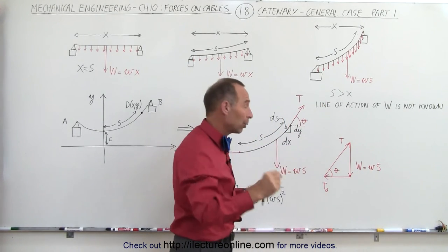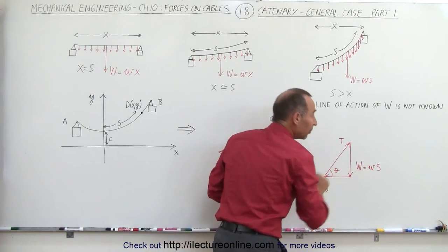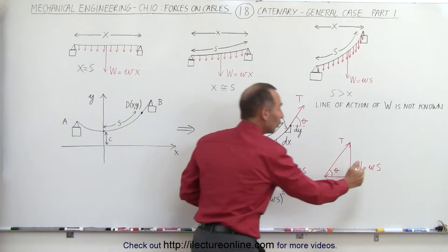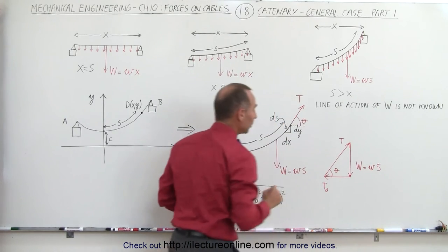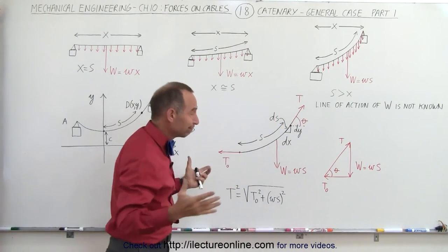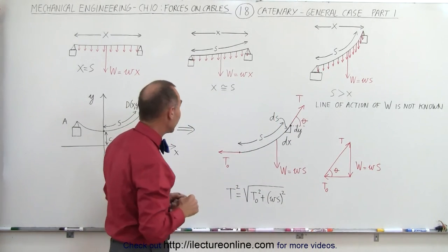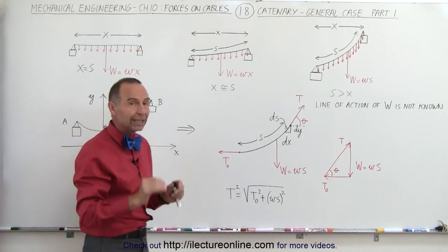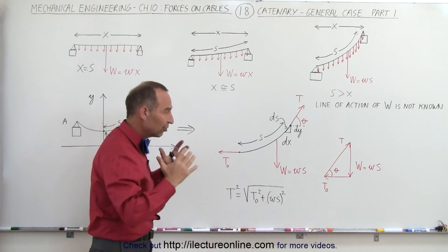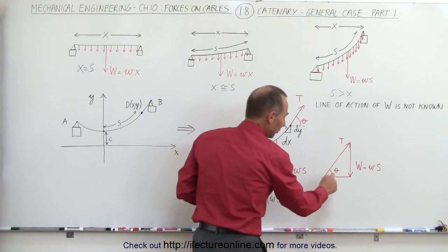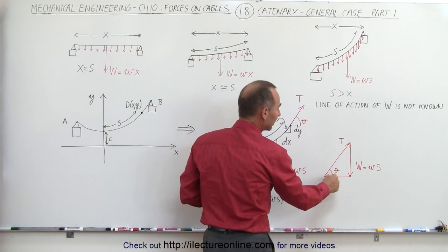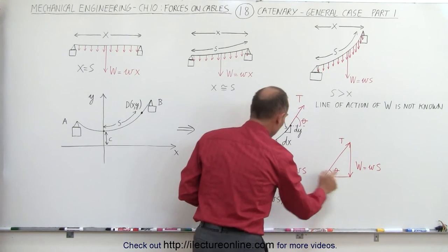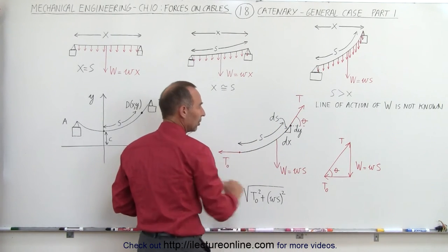If we don't know the arc length s, we will not know the value of W, and that is also one of the problems. We don't know the angle, we don't know the arc length — quite a few unknowns. Eventually we also don't know what c is. All those things will need to be calculated. But we still get that triangle, and if we can somehow measure or calculate that angle, we have the relationship with T₀.